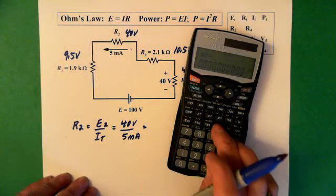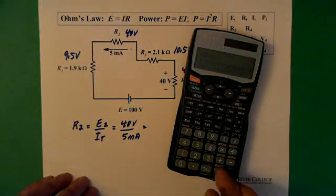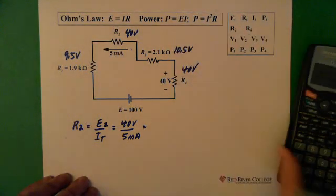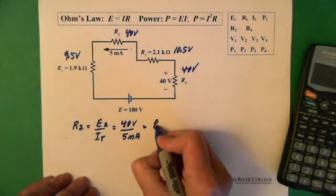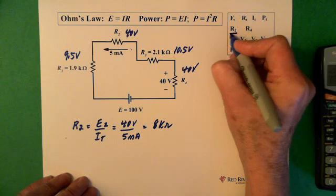And divide, and we end up with 8 kilohms. So we have R2, which is 8 kilohms.